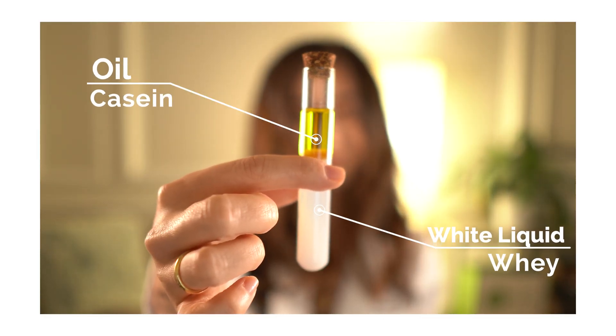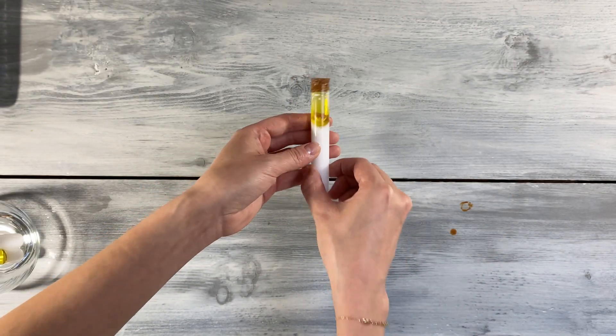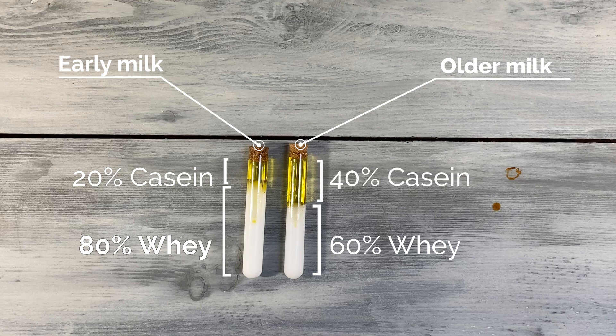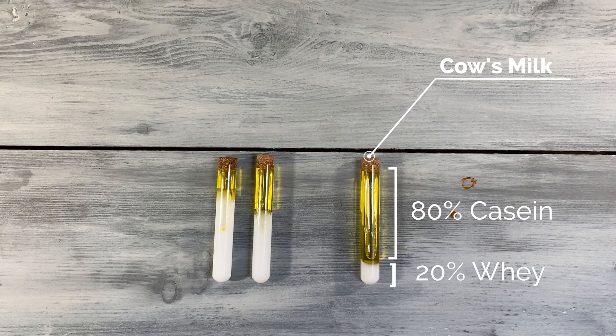I'm going to show you with my little science experiment set up here. I'm using oil to represent the casein and the white liquid to represent the whey. For people, when the baby is first born, early breast milk has about 80% whey and 20% casein. As the baby gets older, mature breast milk has about 60% whey and 40% casein. Human milk toggles back and forth between these two ratios. Cow's milk, on the other hand, is a totally opposite ratio — 80% casein and 20% whey.